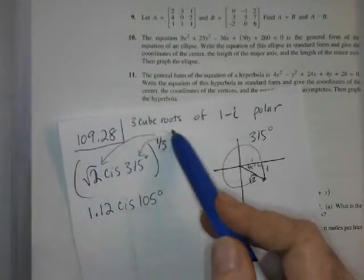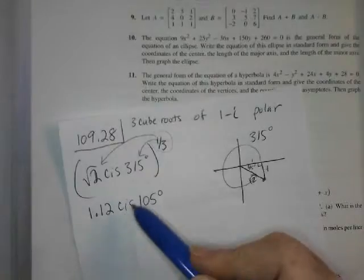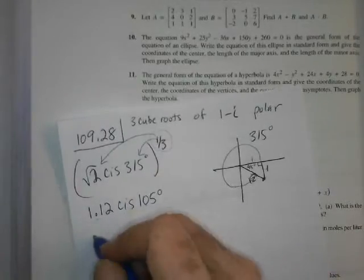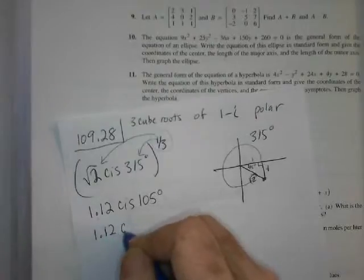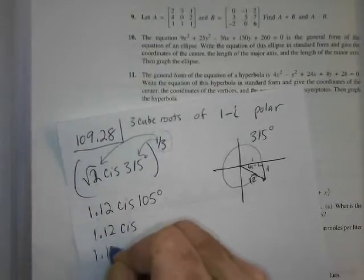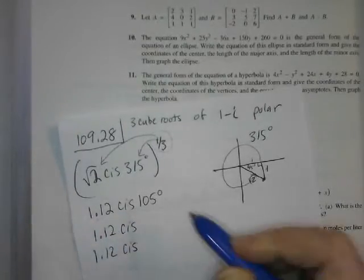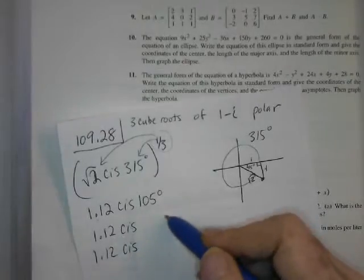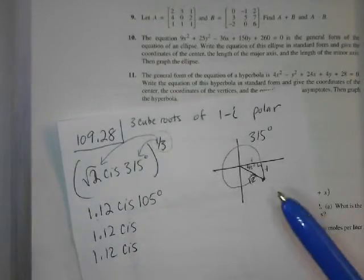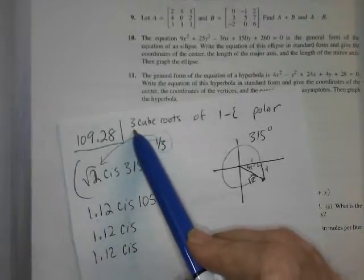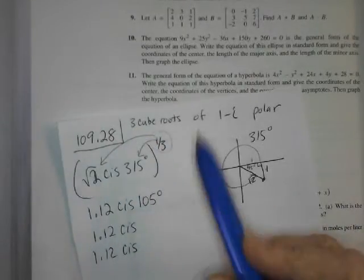So then I need 3 cube roots. So the other 2 are going to have the same radius. And the angle measures are going to differ by 360 divided by 3. 360 divided by 3 is 120.